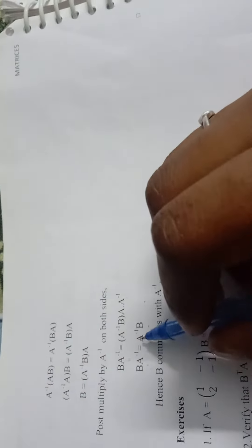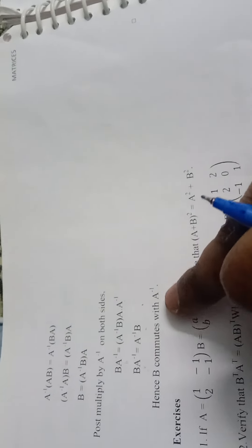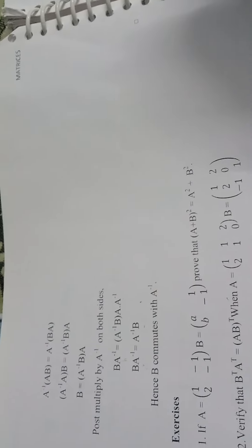B A inverse = this A and A inverse are getting cancelled, and we get A inverse B. So B A inverse = A inverse B. Hence B commutes with A inverse. Hope you all understand, thank you.